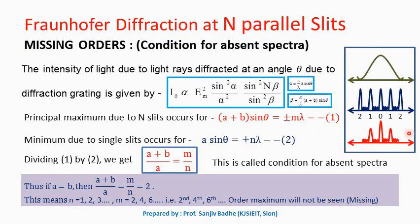We have seen the intensity distribution in case of diffraction grating is the product of two graphs. This is E_m² sin²α/α² graph, which represents the effect of single slit. And this is sin²(nβ)/sin²β graph, which represents the combined effect of n number of slits. The final intensity distribution is the product of the two graphs.